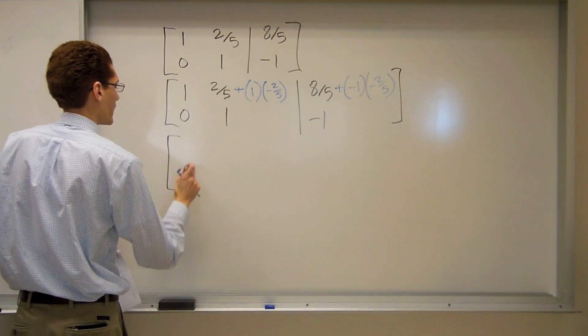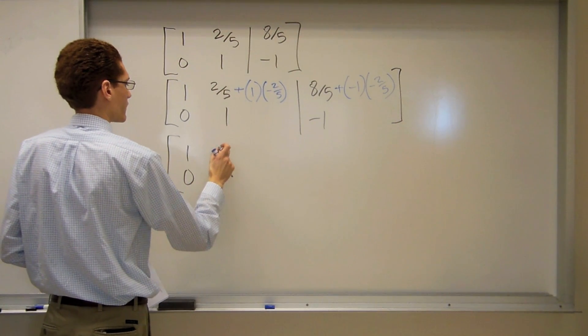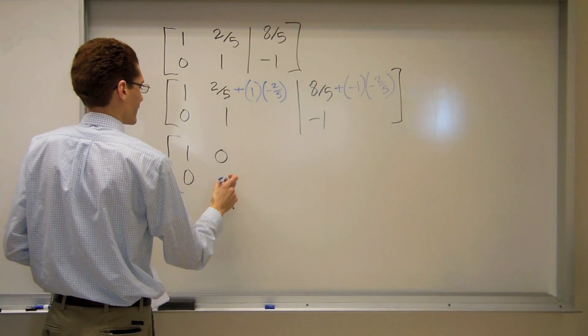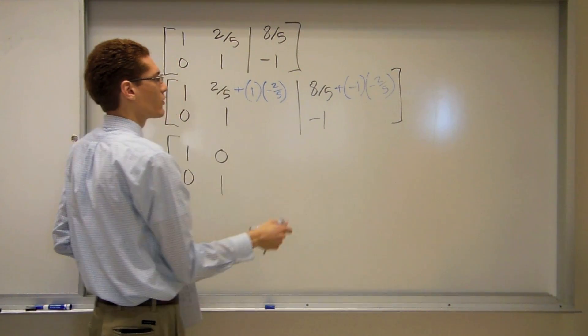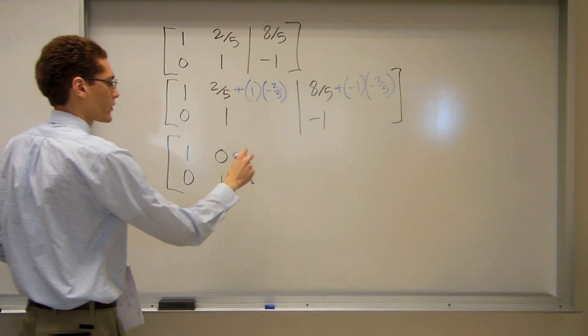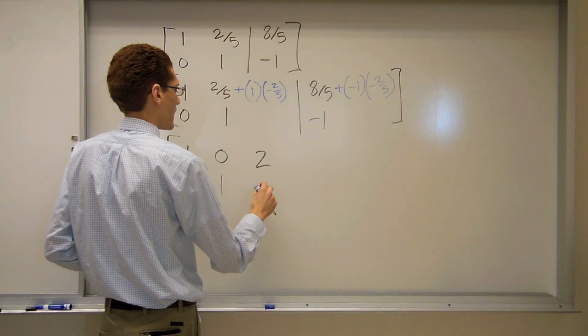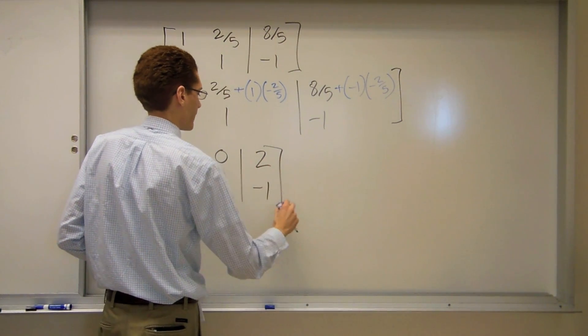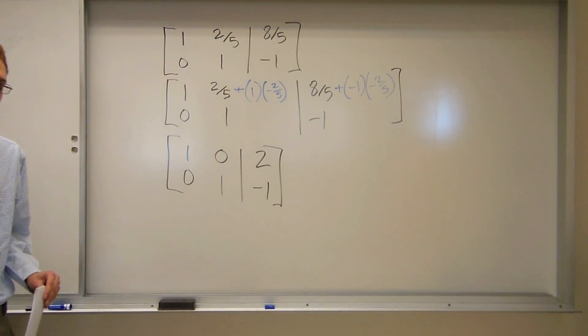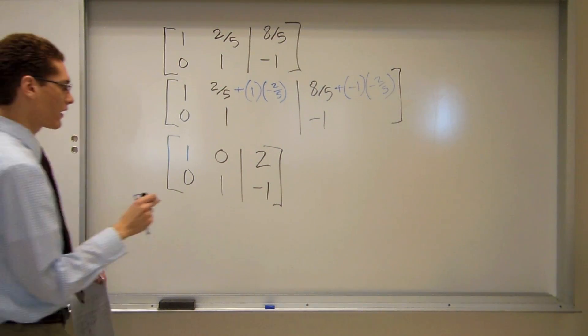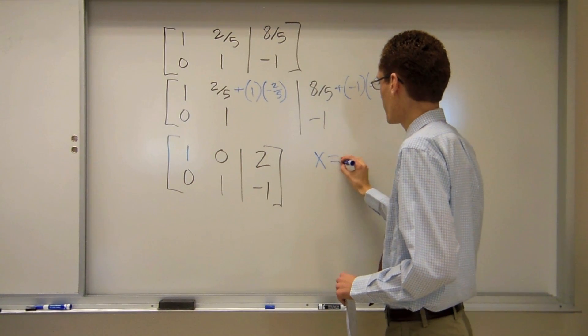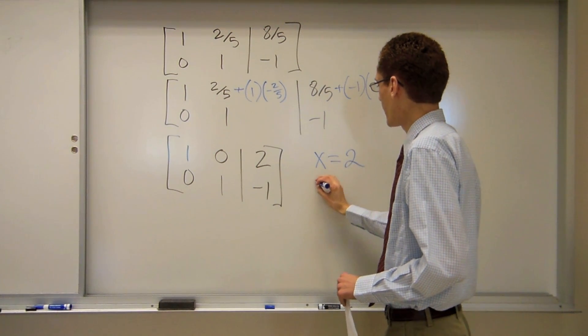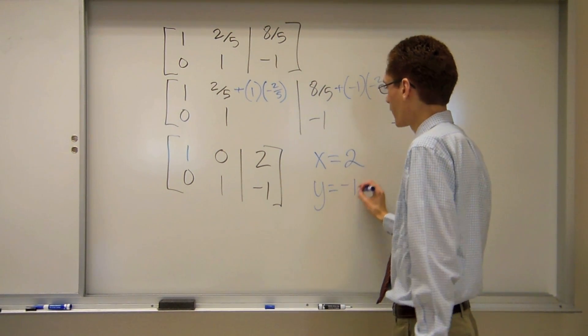Here I do need to write it because I have 8 fifths plus negative 1 times negative 2 fifths. So that will leave me with the matrix 1, 0, 0, 1. 8 fifths plus 2 fifths is going to be 10 fifths or 2, and I'm left with negative 1 down there.